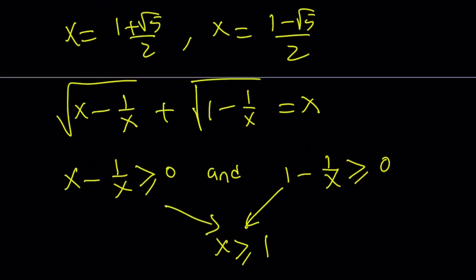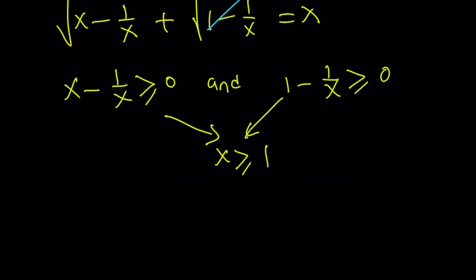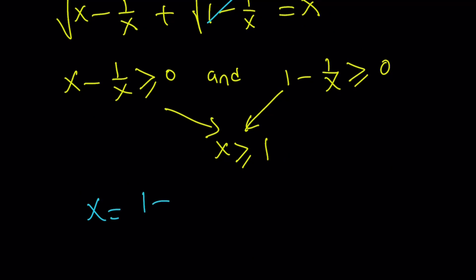Any x value needs to be on that interval. But unfortunately, 1 minus root 5 over 2 is less than 0. Obviously that is definitely less than 1. So we're not going to be able to accept it. So we end up with a single solution, which is the golden ratio: x equals 1 plus root 5 over 2.